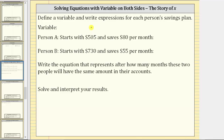We are asked to define a variable and write expressions for each person's savings plan. Person A starts with $505 and saves $80 per month. Person B starts with $730 and saves $55 per month.